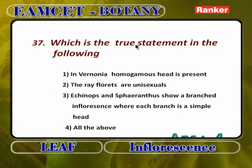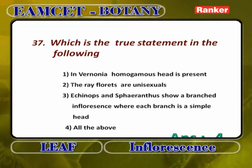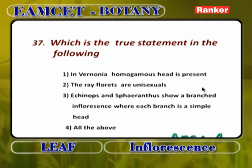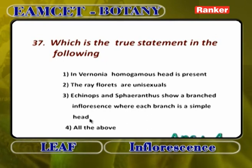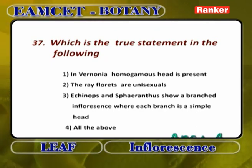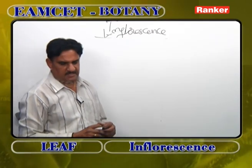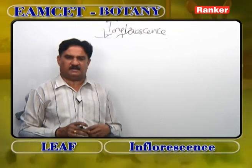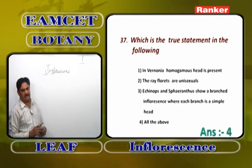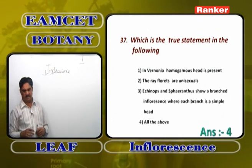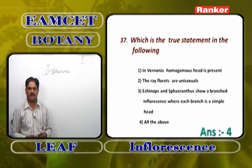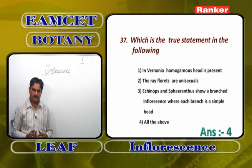True statements: in Vernonia, homogamous head is present — correct, all disc florets. Ray florets are unisexual — correct, because gynoecium is present but androecium is completely absent. Echinops and sphaeranthus show a branched inflorescence where each branch is a simple head — correct, that is why it is a compound head. All of the above are correct.